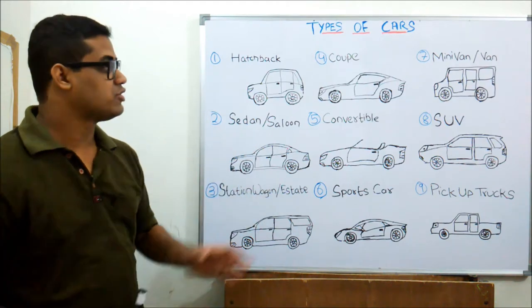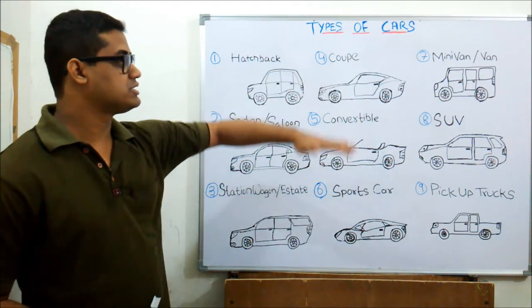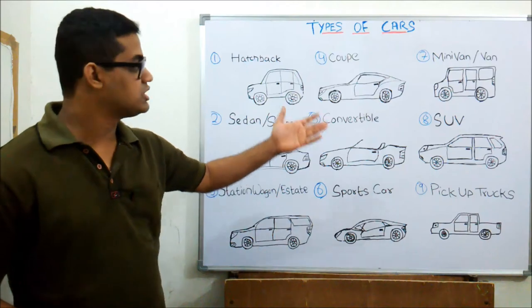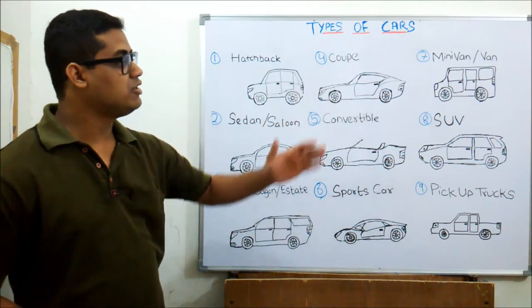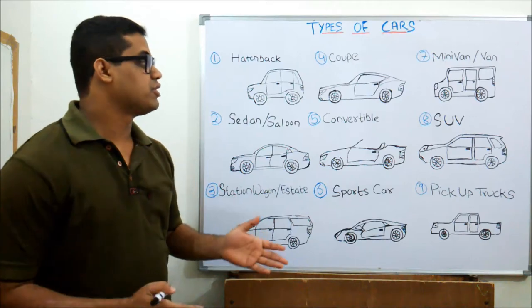That's just about the minivan. If you have the first row and this is empty, it's for cargo purposes. If you have all three rows upright, that is for passenger carrying purposes. You can configure the van as per your requirement.